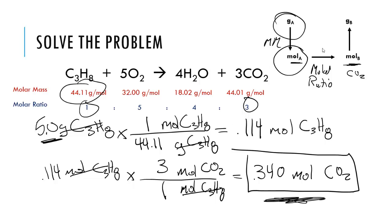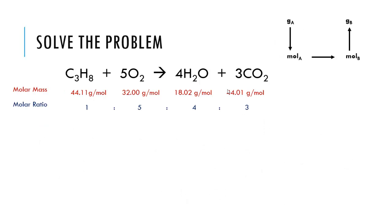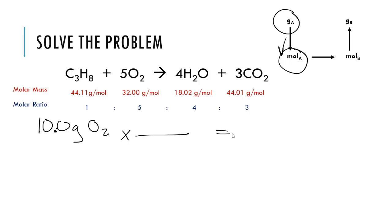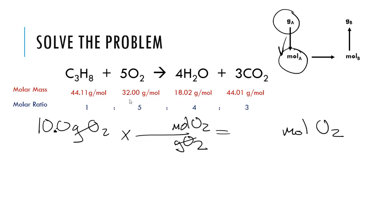We don't have to worry about converting to grams of B just yet, because we want to figure out which one limits the reaction. So next up, let's solve for O2. Starting with 10 grams of O2, we're going back to the start of the square and converting to moles of O2. Set up a conversion: moles of O2 on top, grams of O2 cancels on the bottom. According to our molar mass, 32.00 grams per one mole. 10 divided by 32 gives me 0.313 moles of O2.